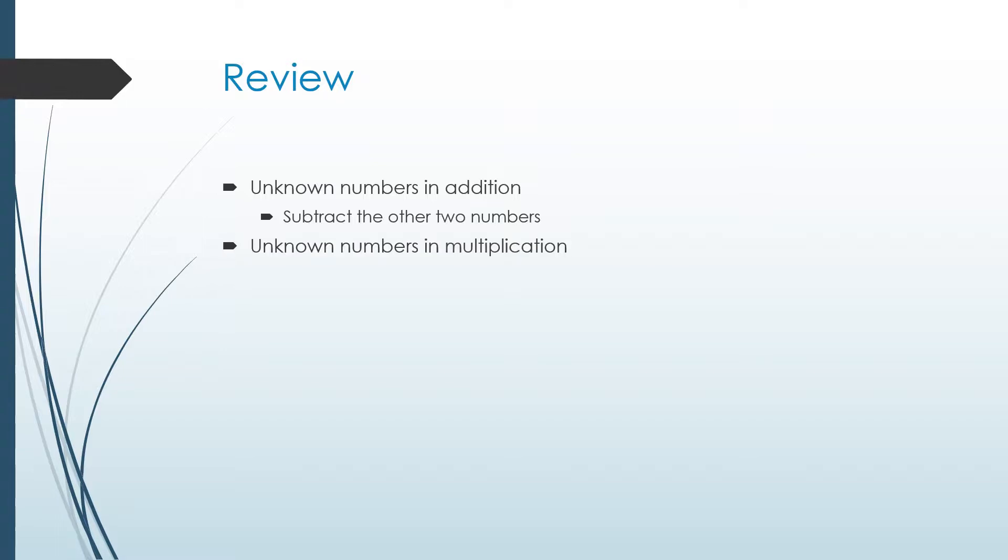Unknown numbers in multiplication is kind of the same. If you're missing one of those factors, you're going to divide the other two numbers that they gave you.